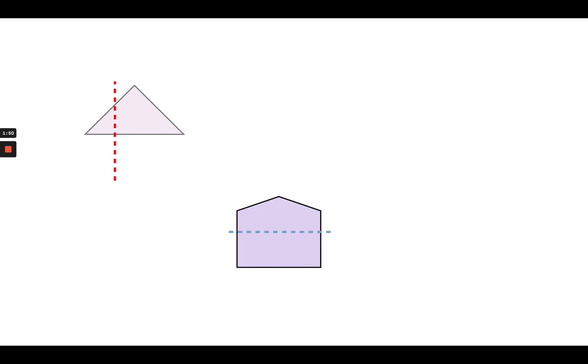This is a pentagon, and again, this pentagon, if I were to fold it along the dotted line drawn here, it would not show symmetry. But if I had a vertical line right down the middle, it would be symmetrical.